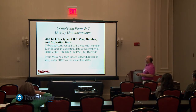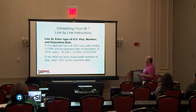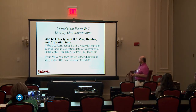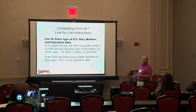Line 6c is the type of US visa, number, and expiration date — for example, a B1 or B2 visa with its number and expiration date. If the visa was issued under 'duration of stay,' you can use that abbreviation as the expiration date instead of a specific date.